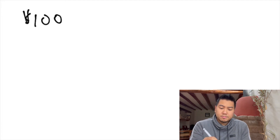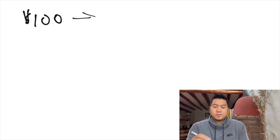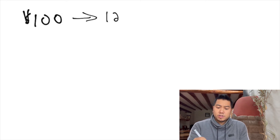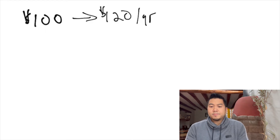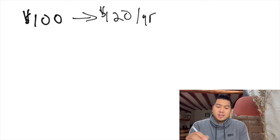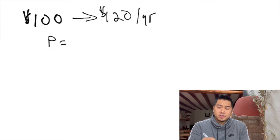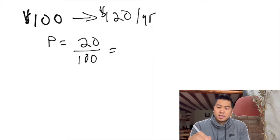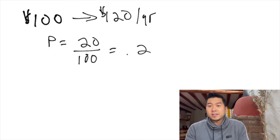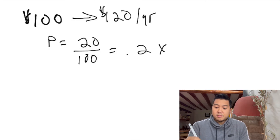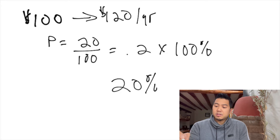If you buy something for a hundred dollars and you sold it for a hundred and twenty dollars one year later, your ROI is your profit divided by your investment. Your profit is twenty dollars divided by your investment of a hundred dollars — that gives you 0.2. We want to find this in percentages, so we multiply by one hundred percent. That is twenty percent ROI.